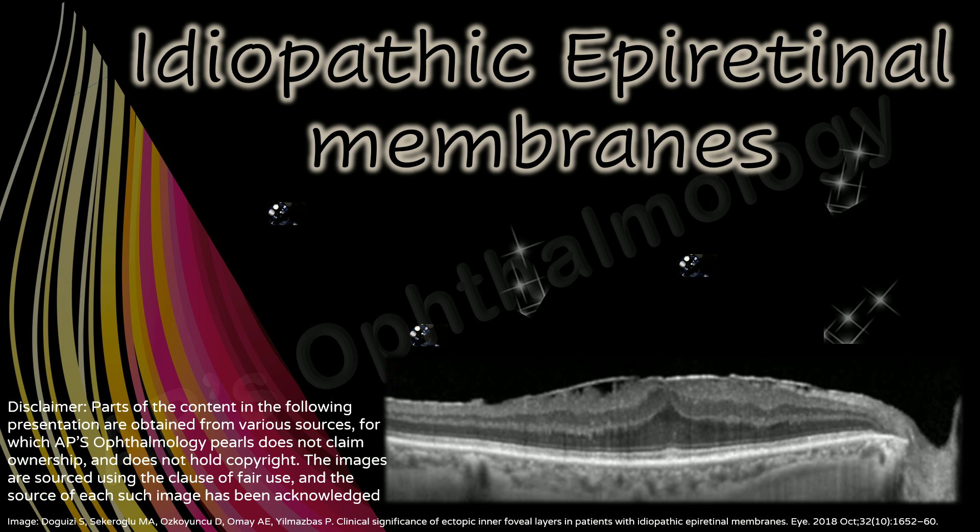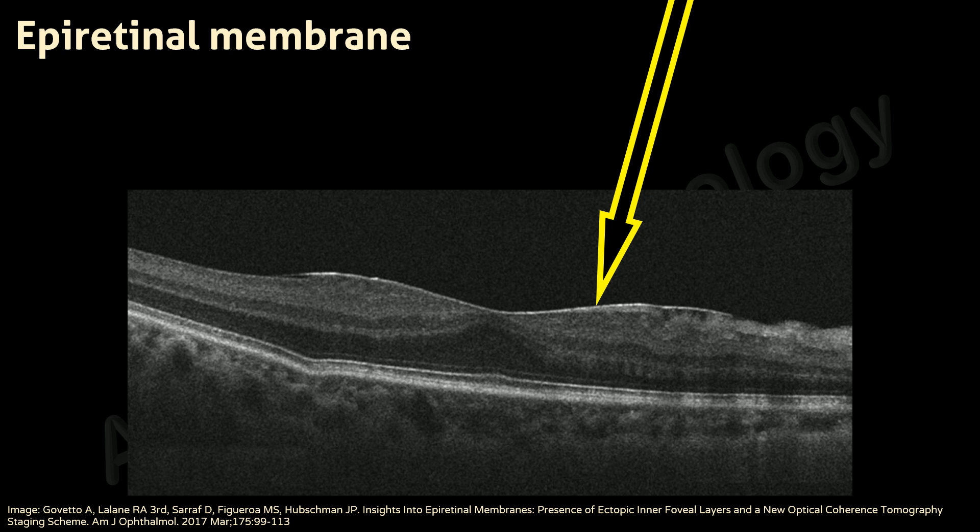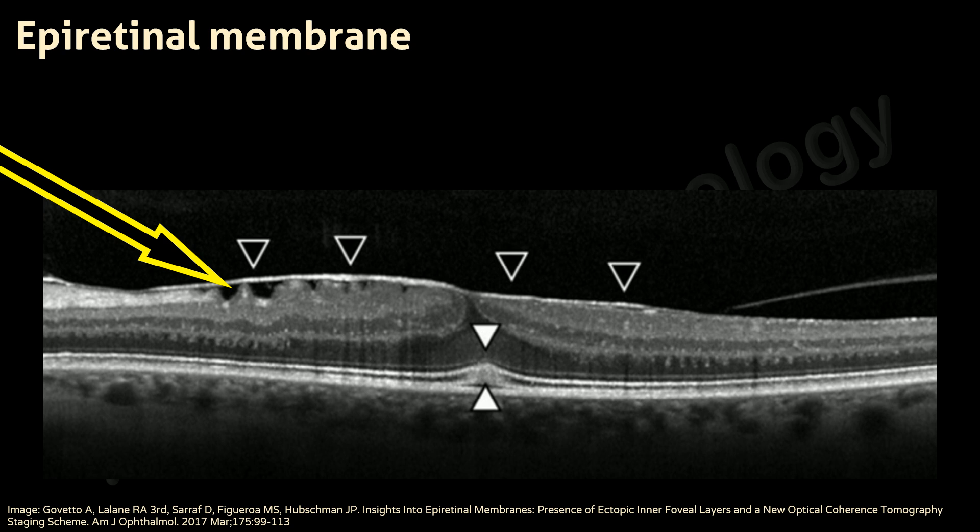An epiretinal membrane is characterized by fibrocellular proliferation at the vitreoretinal interface above the internal limiting membrane, and appears on OCT as a discrete, irregular, and hyperreflective line above the inner retinal surface, frequently accompanied by wrinkling of the underlying retina with hyperreflective spaces between the ERM and the internal limiting membrane.